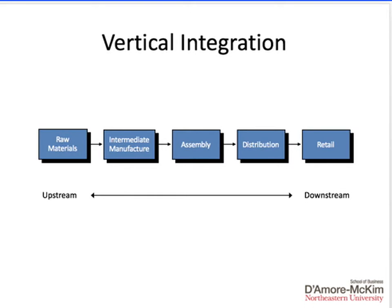If we picture what a value chain looks like, these are generally the key stages in a firm's value chain, moving a product from raw materials all the way to finished goods. If we are dealing with the supply aspects or the earlier aspects of production, we refer to that as upstream, whereas as we move towards the relationship and the retail aspect, we refer to that as downstream.